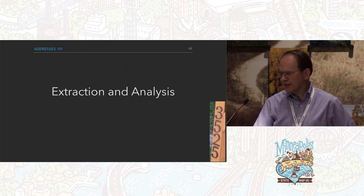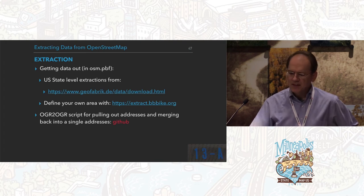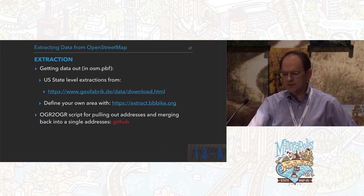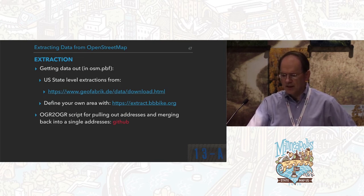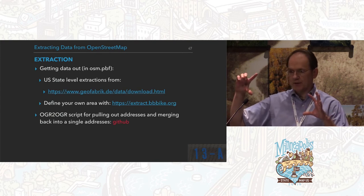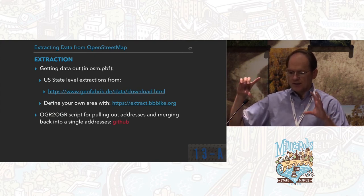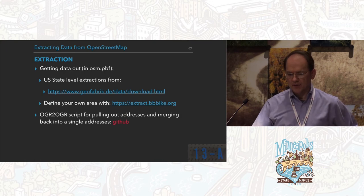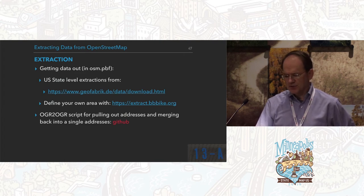A little about extraction and analysis — five minutes left. Getting data out: I tend to use the Geofabrik website, which has state-based extractions. Extractbbbike.org also allows you to define your own area, which is nice if Geofabrik doesn't have the area you're interested in. I have an ogr2ogr script written in Perl that pulls these all out, and someday I'll put it on the GitHub website.